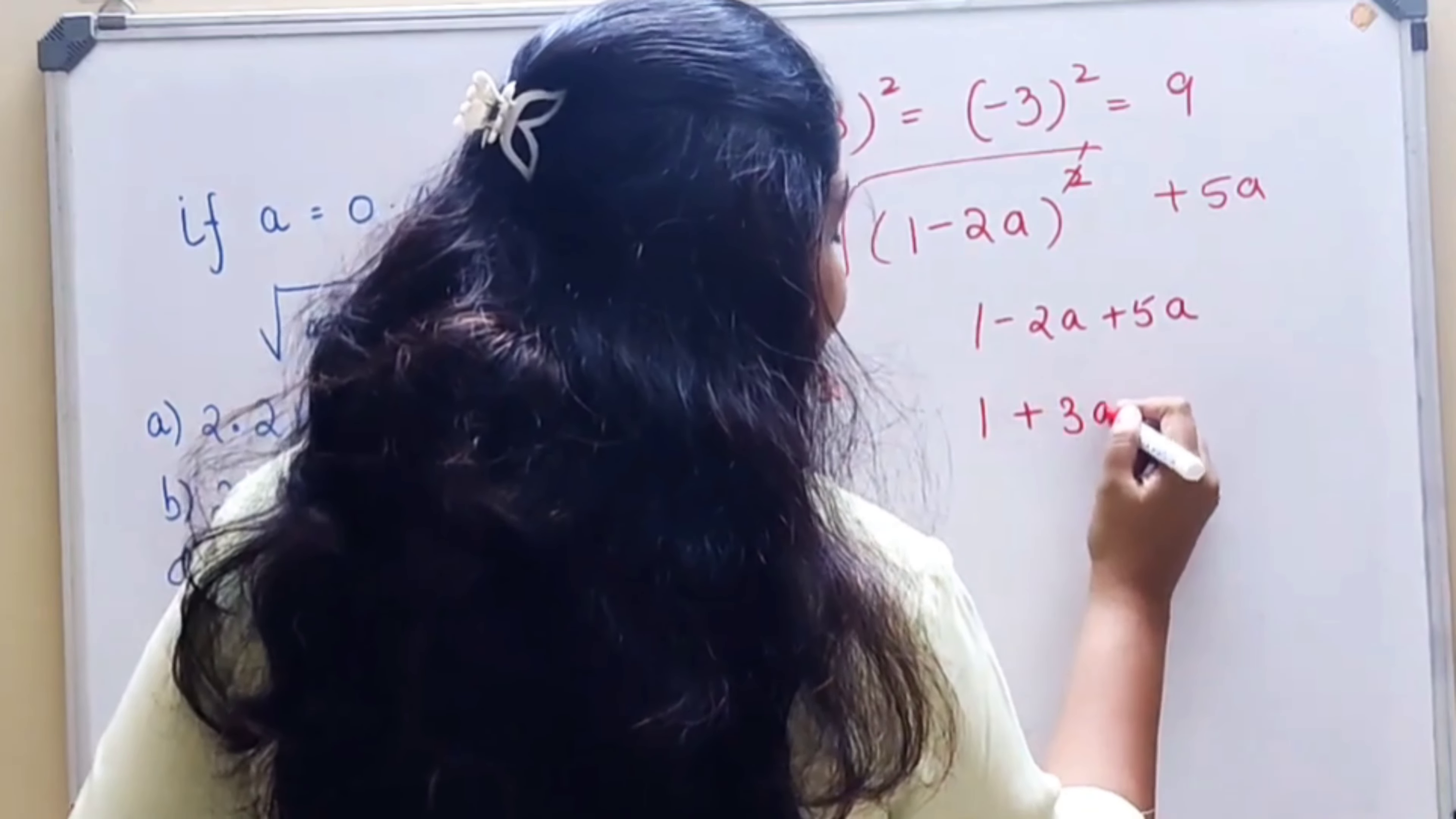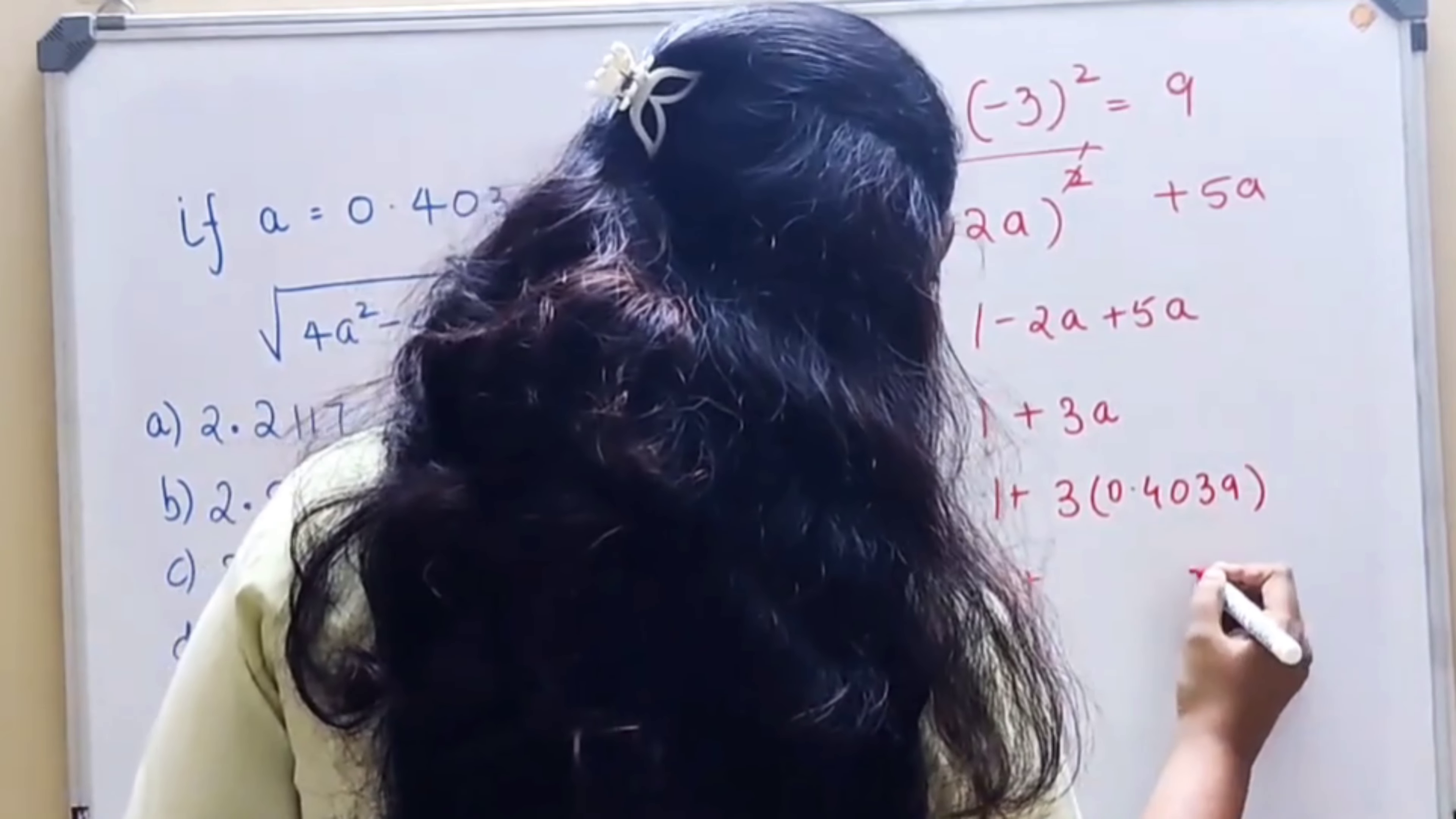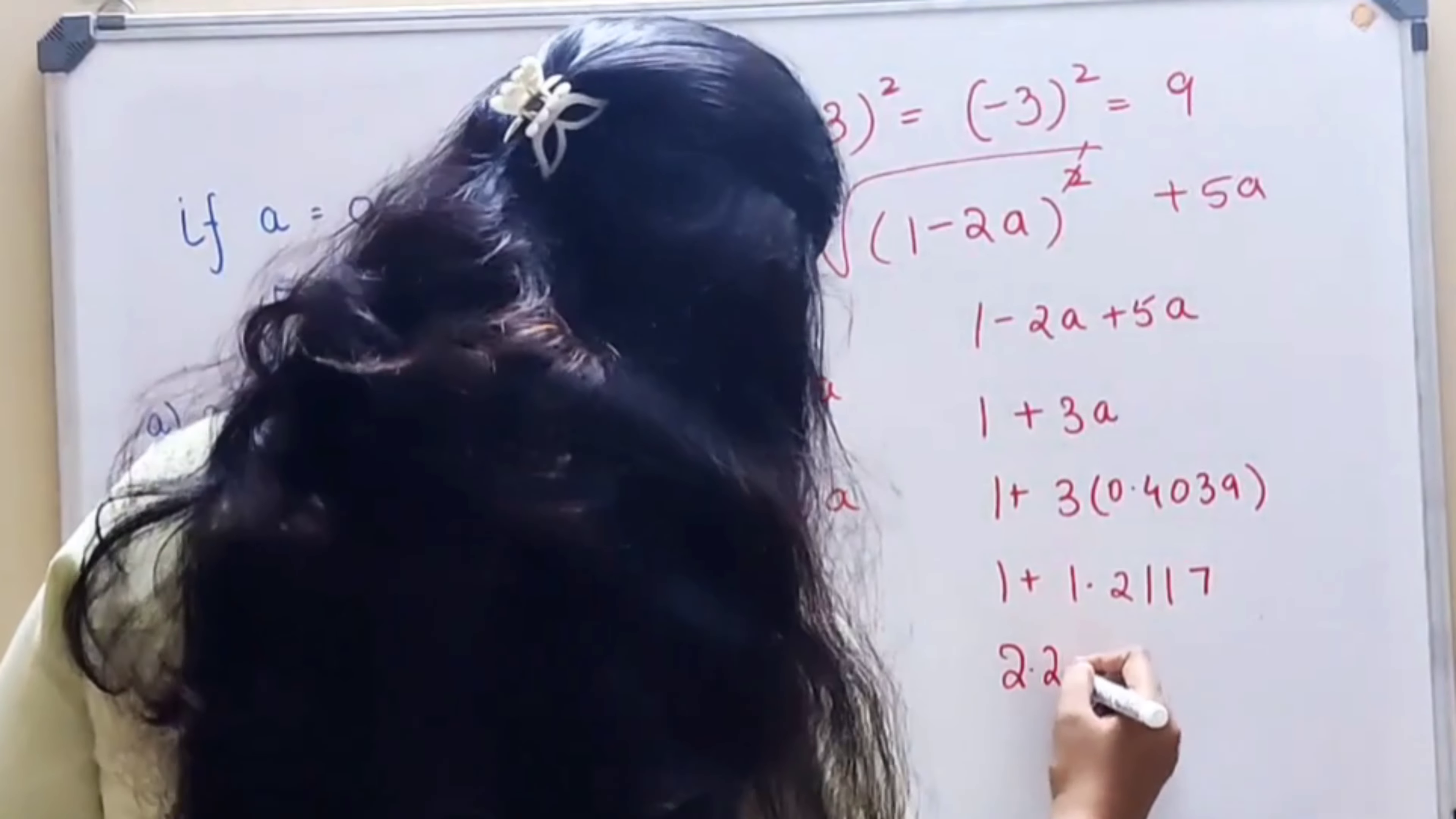Now instead of a, we'll put the value of what is given over here, that value is 0.4039. So 1 + this can be written as 7, 2 carry, 11, 1 carry, then 12 and 1.